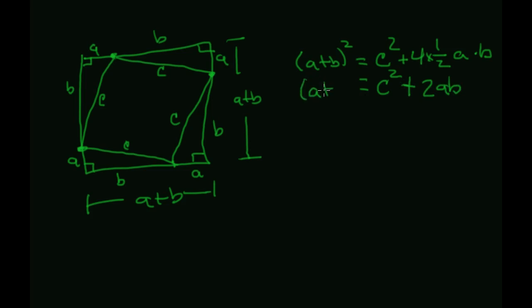All right, and we'll just bring this down. So on this side, that's the same as A plus B times A plus B is equal to C squared plus two A, B.